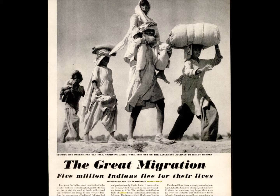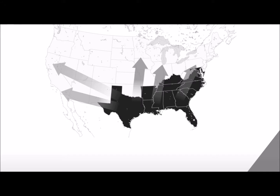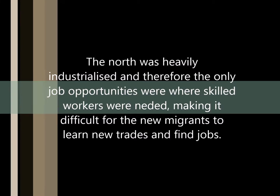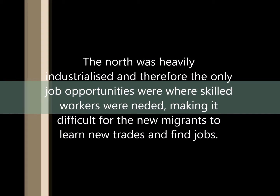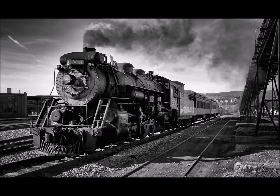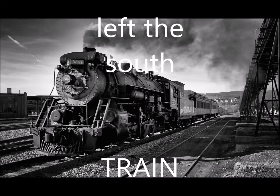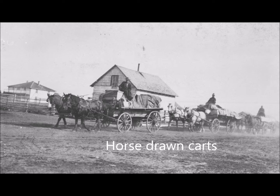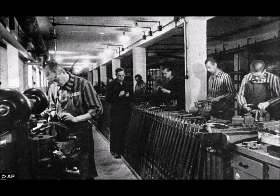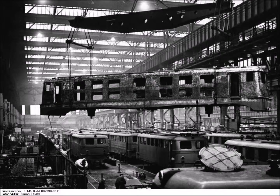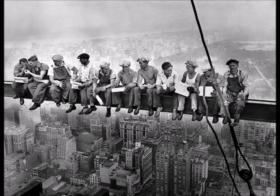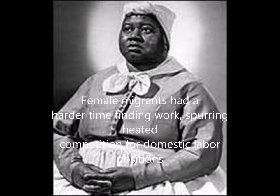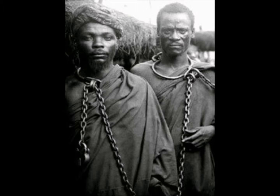After the Civil War, many African Americans thought that the grass was greener on the other side and decided to migrate up North, but not everything was as they thought it would be. The North was heavily industrialized, and therefore the only job opportunities were where skilled workers were needed, making it difficult for the new migrants to learn new trades and find jobs. Some 1 million Blacks had left the South, usually travelling by train, boat, or bus; a smaller number had automobiles or even horse-drawn carts. New arrivals found jobs in factories, slaughterhouses, and foundries, where working conditions were sometimes very dangerous. Female migrants had a harder time finding work, spurring heated competition for domestic labour positions.